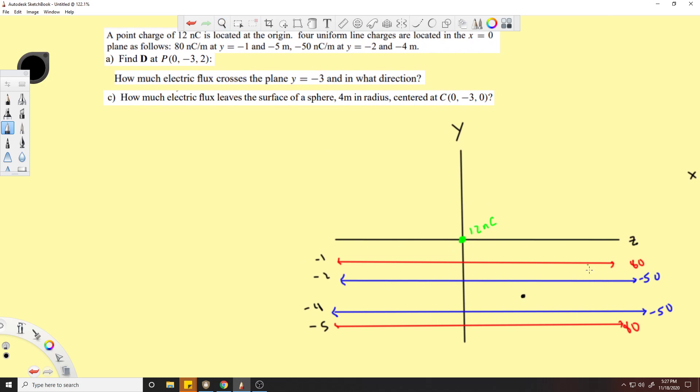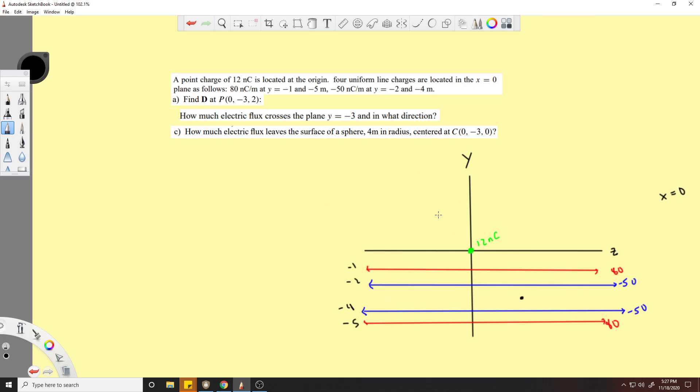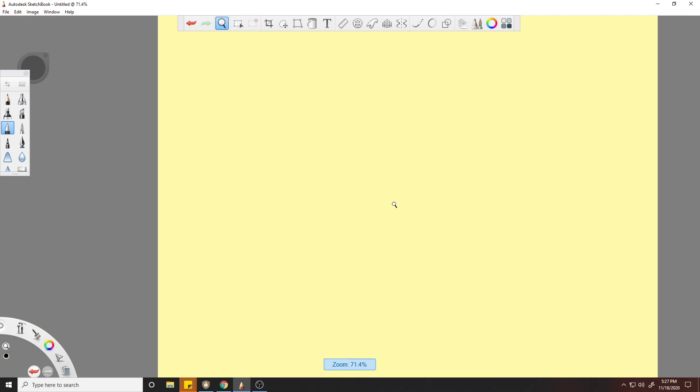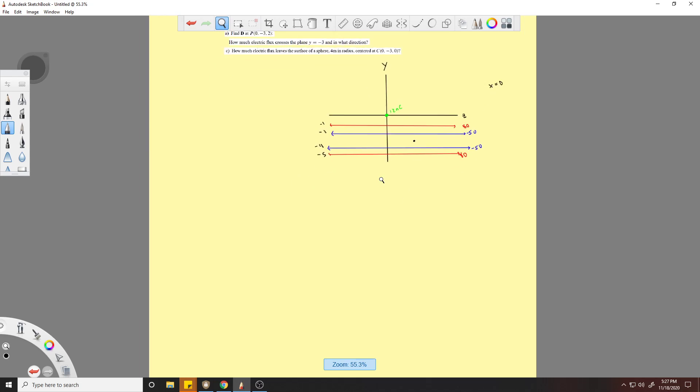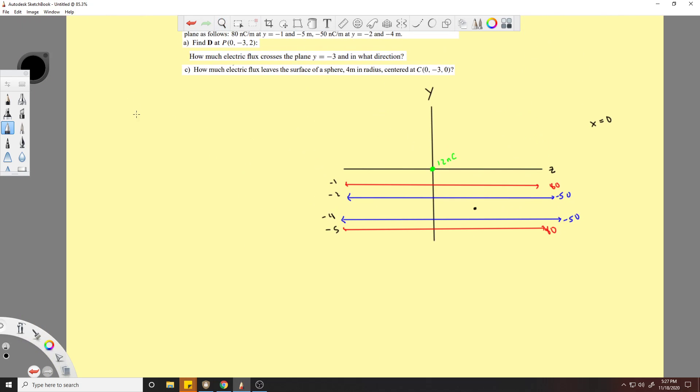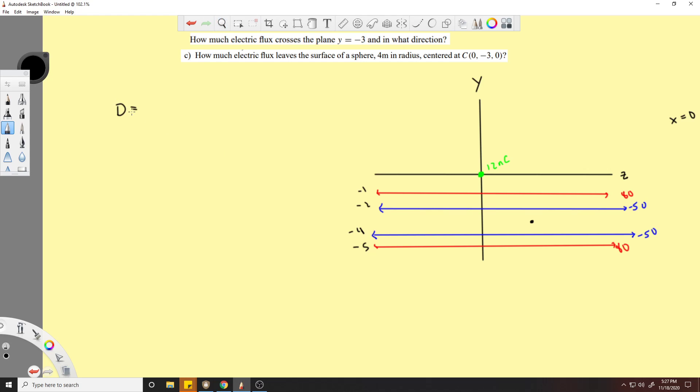Now that we know that these line charges are irrelevant to this point here, we can find the value of this 12 nanocoulomb charge onto this point charge. D is going to be equal to the value of our charge times the distance between them, so this is negative three and this is two.